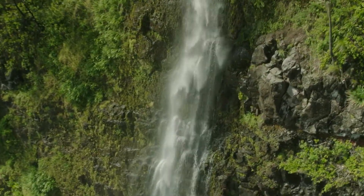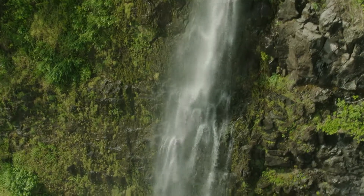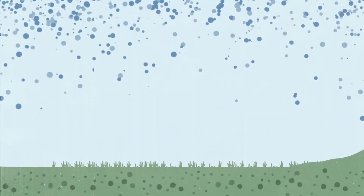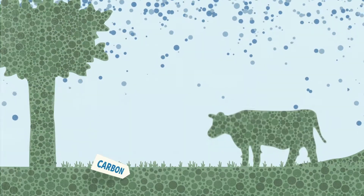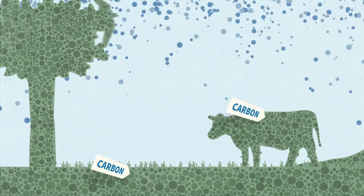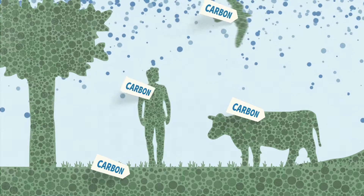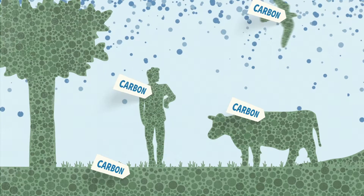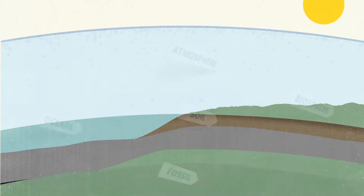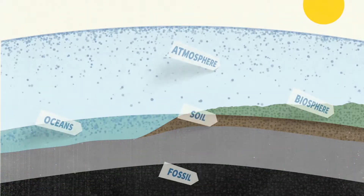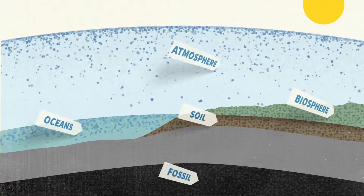Climate change is about too much carbon in our atmosphere. But carbon is part of the cycle of nature — it is one of the building blocks of life. Our bodies are 18.5% carbon. A certain percentage of our atmosphere is carbon. So it's all about balance. How can we find a healthy balance?